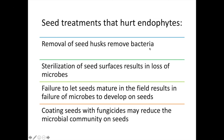When we remove husks, we remove microbes. If you sterilize seeds to remove pathogens, you may have a non-target effect: you'll also hit your beneficial microbes. The result is seedlings that grow worse and are more susceptible to fungal disease.